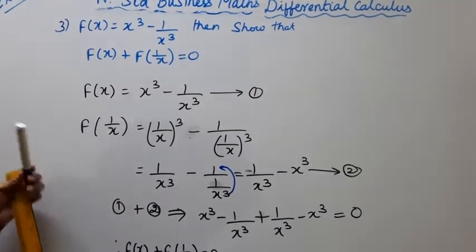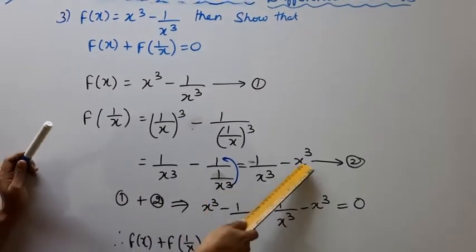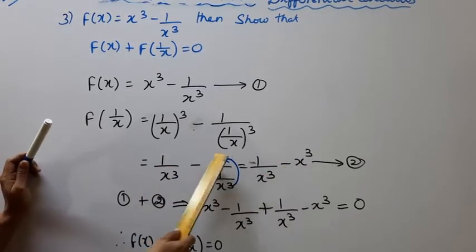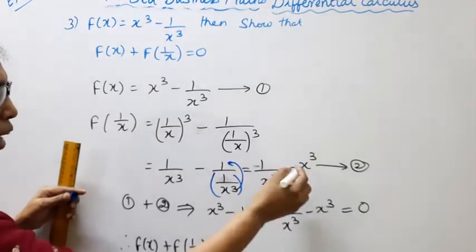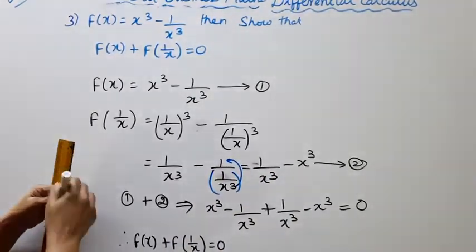This will be minus x cubed. 1 by x cubed. 1 by 1 by x cubed becomes x cubed. This will be equation 2.